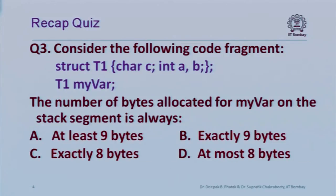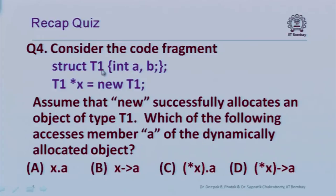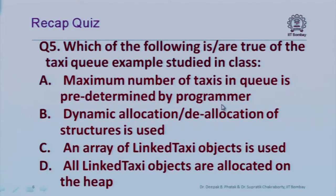Second quiz question: structure T1 has a character and two integers; how many bytes are allocated for an object of type T1? Third question: a struct has two integer members, an object is dynamically allocated and X is a pointer to it — which expressions allow access to member A of the dynamically allocated object?